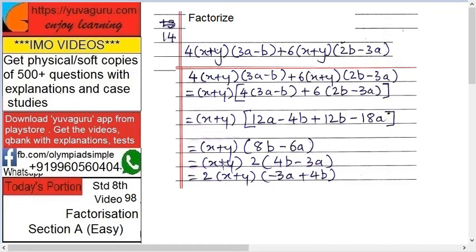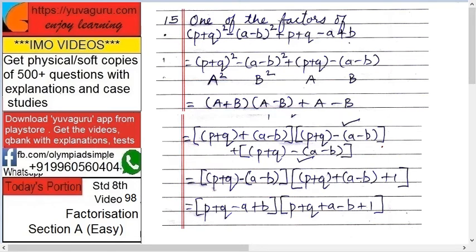Solve this again: (x+y)(8b-6a). Check this. Then (x+y) times 2 common, 4b-3a. Write it properly: equals 2(x+y)(-3a+4b). So these are the factors.